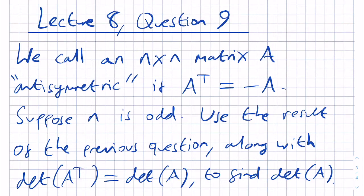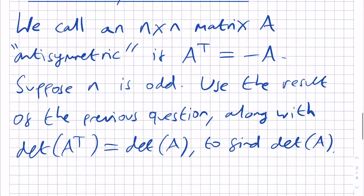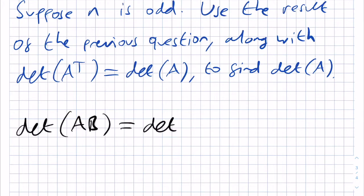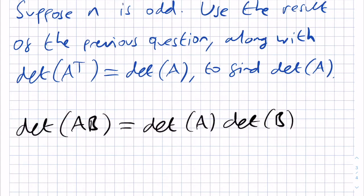The result of the previous question is the one we considered in the previous video, i.e. that det of AB is equal to det of A times det of B for all matrices A and B. The determinant of the product of matrices is the product of the determinants.